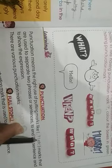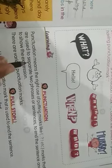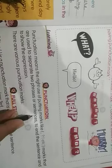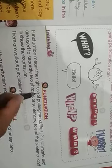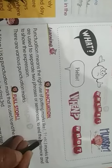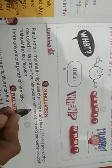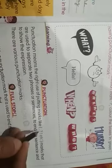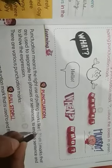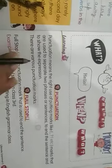Punctuation means Viramchin. Punctuation means the right use of putting marks like comma, question mark, exclamatory sign, etc. — marks that are used to separate two phrases or sentences, to end the sentence, and to show the expression. Viramchin ka matlab hai in sabhi marks ko — jaise comma hai, question mark hai, exclamatory sign hai — in sabhi marks ko sahi tariqe se laga kar kisi bhi vaqyansh ko ya vaqyay ko alag karna, taaki hum un vaqyo ya vaqyansh ko alag kar sake.